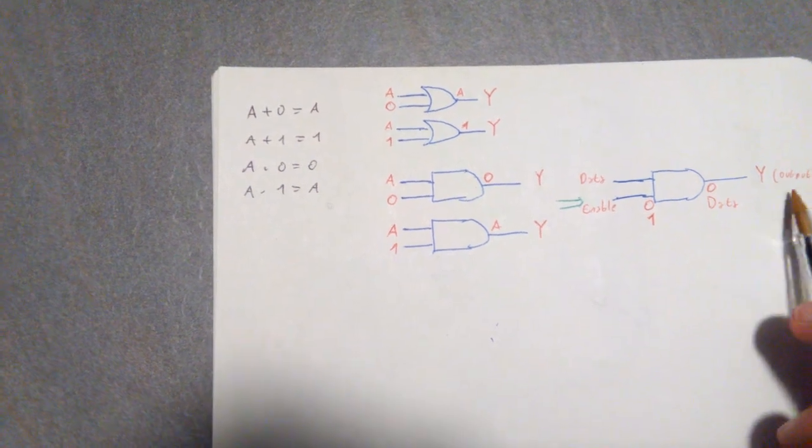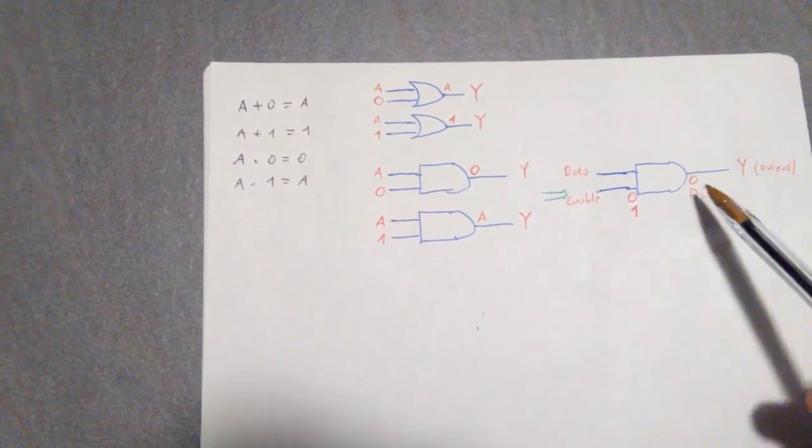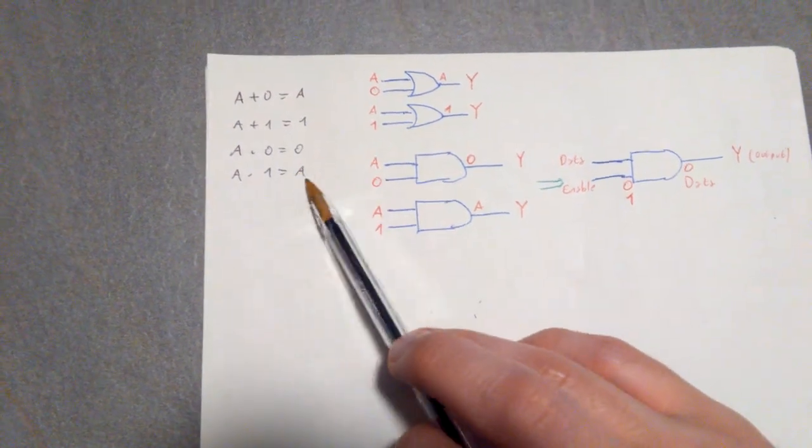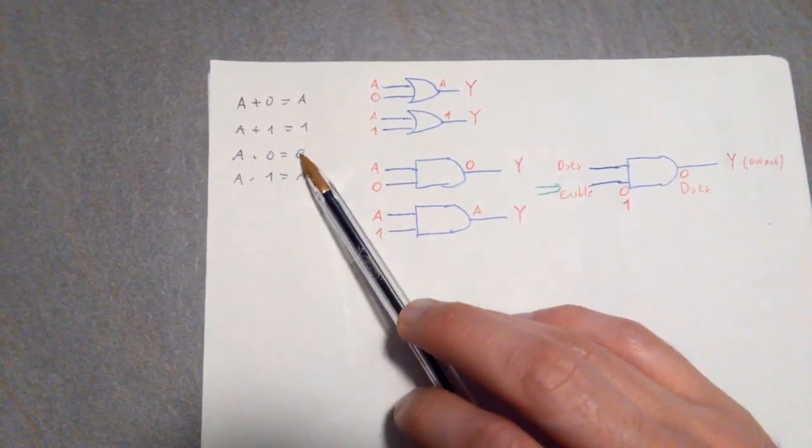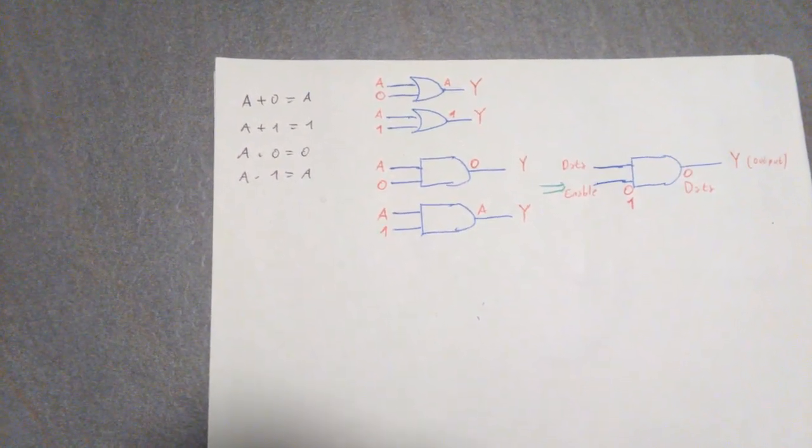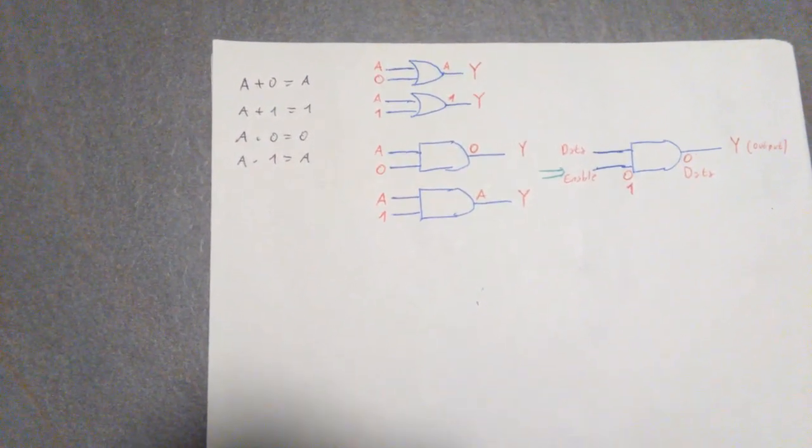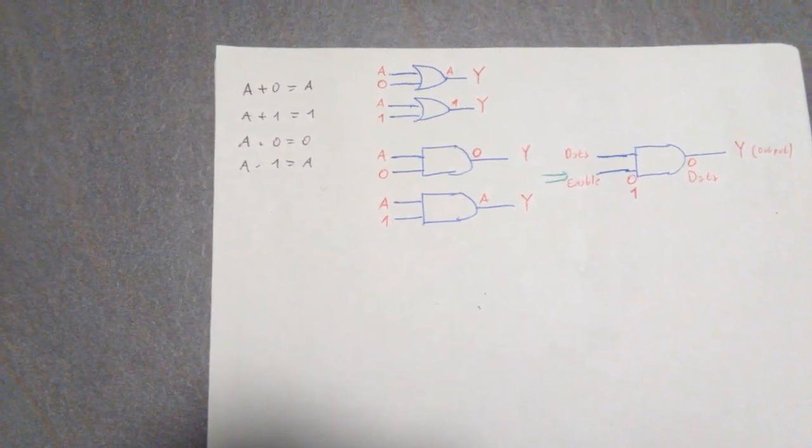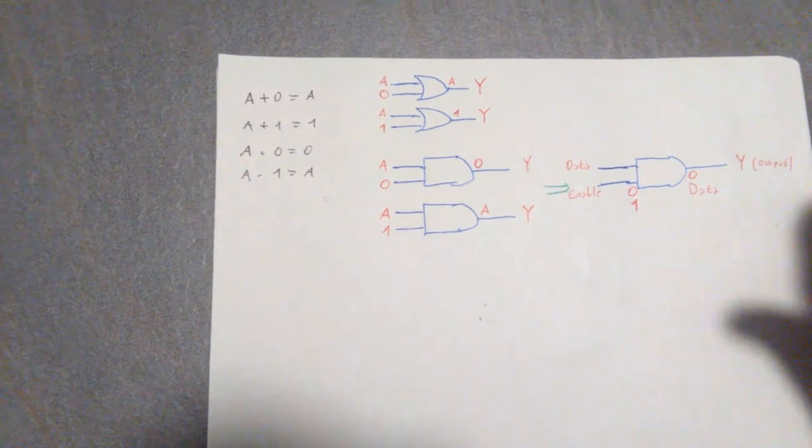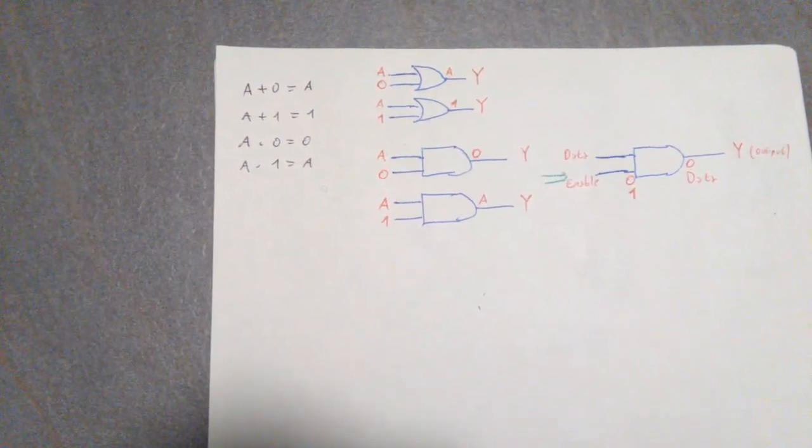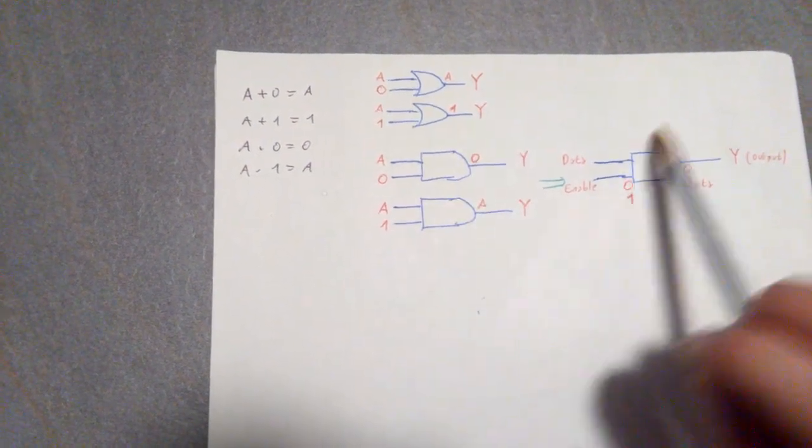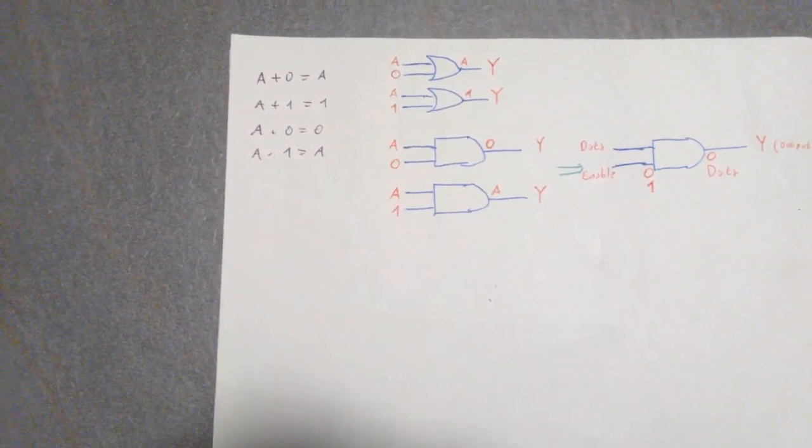And this is particularly useful because we may want to have circuits that actually have an enable line. So those two last properties here are particularly useful for this very reason. And I'm going to go through in the next few videos through other particular properties, which I've already been talking about, but I'm going to go through them again just to show you the implementation at the circuit level.